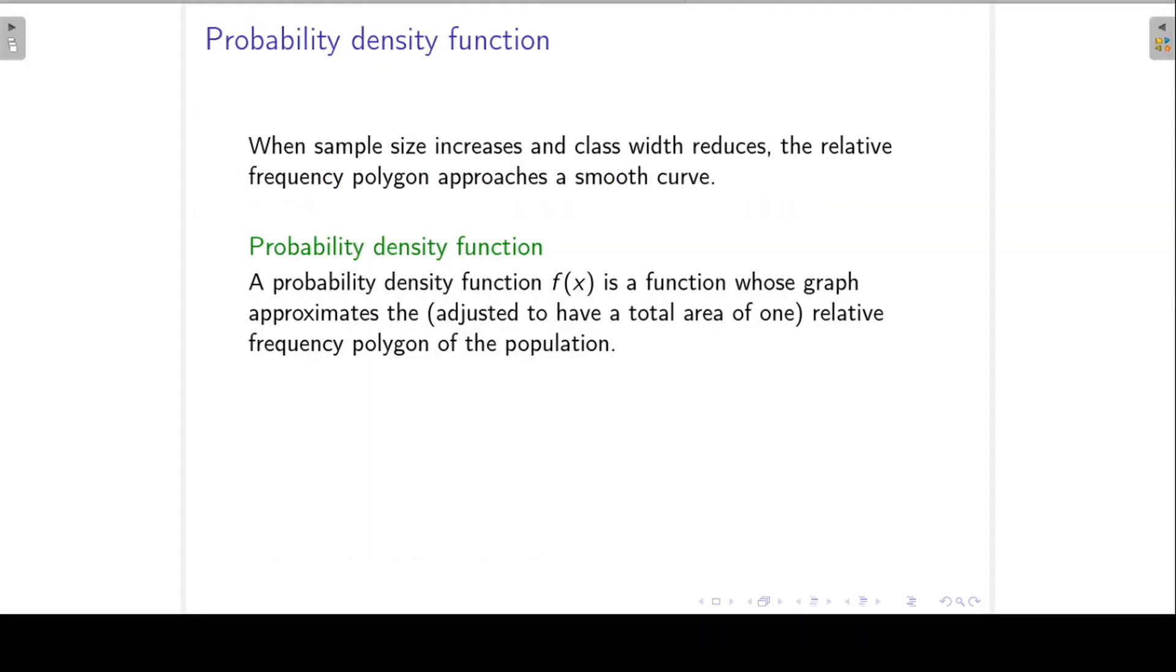So when the sample size increases and the class width reduces, the relative frequency polygon approaches a smooth curve. Now, this smooth curve is called the probability density function, f of x. The probability density function is a function whose graph approximates the relative frequency polygon of the population. This graph is also adjusted to have a total area of 1.